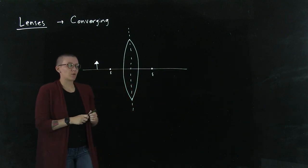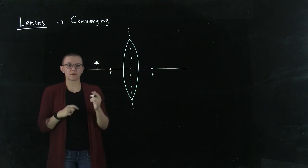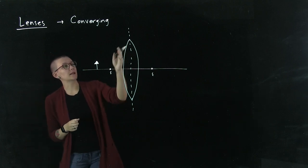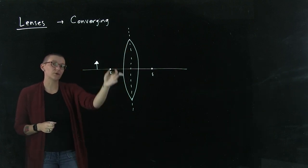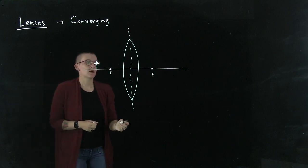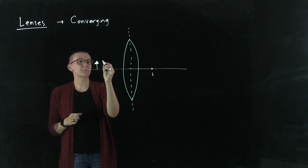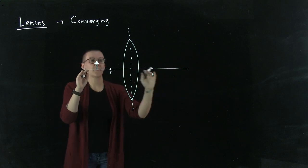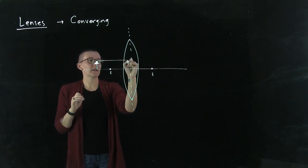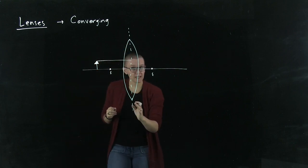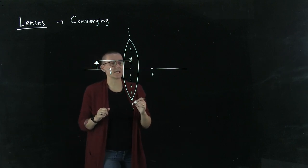What we can draw first - remember we're in the realm of the thin lens approximation - I have my lens here and this dashed line indicating where the optical plane of the lens is. The first ray that we're going to draw is parallel to this optical axis. I'm going to draw a parallel ray.